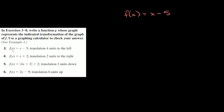So the first one we have is f of x is equal to x minus five — already wrote it up here — and it says translate it four units to the left. Whenever you move a function left or right, moving to the left is a negative number and moving to the right is a positive number, just like on a number line or a graph.